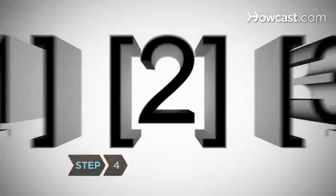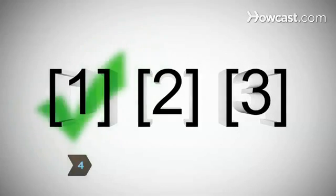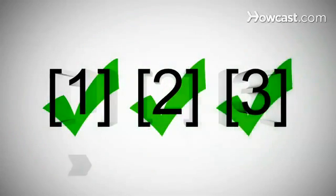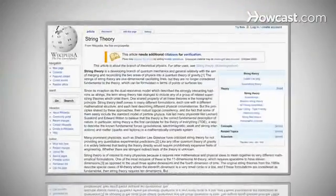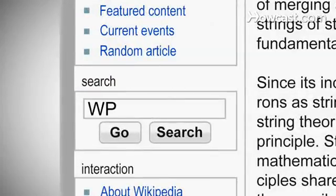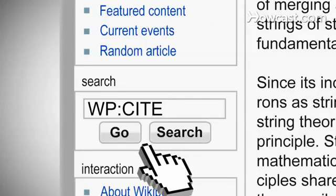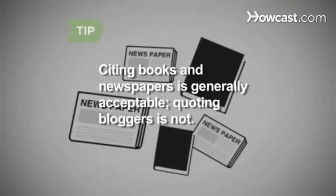Step 4. If you're adding new information, be sure to provide reliable sources that verify your work, or it will likely be deleted. Detailed instructions on the proper way to cite sources can be found by typing WP:CITE into the search box and hitting Go. Material in books and newspapers generally is considered reliable. The musings of bloggers are not. And don't bother writing about yourself — it's considered a conflict of interest.